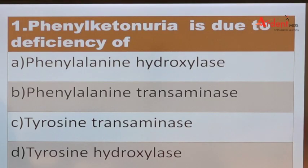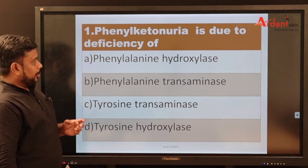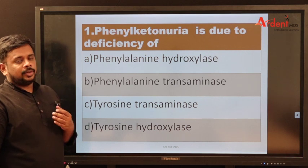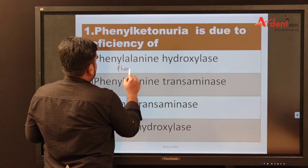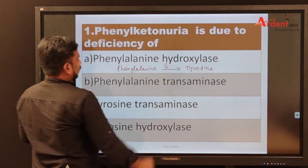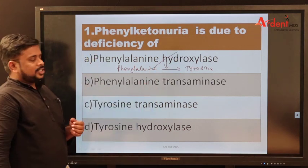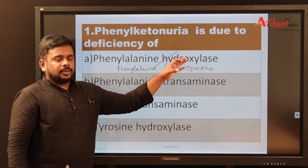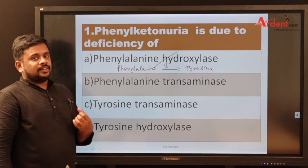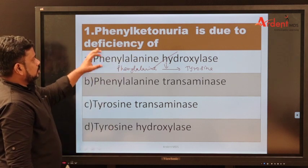Now for MCQ discussion: phenylketonuria is due to a defect in which enzyme? In the first step of aromatic amino acid metabolism, phenylalanine is converted into tyrosine by phenylalanine hydroxylase. A defect in this enzyme leads to phenylalanine accumulation, which is converted into phenylacetate and phenyllactate, excreted in urine — this is phenylketonuria.